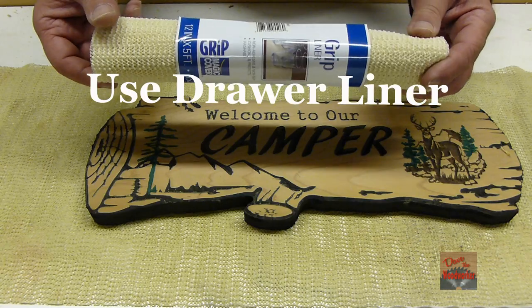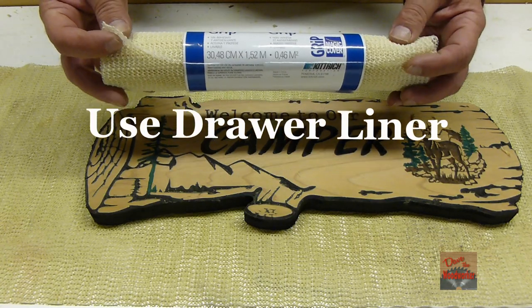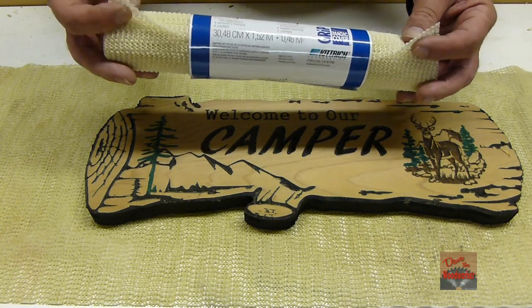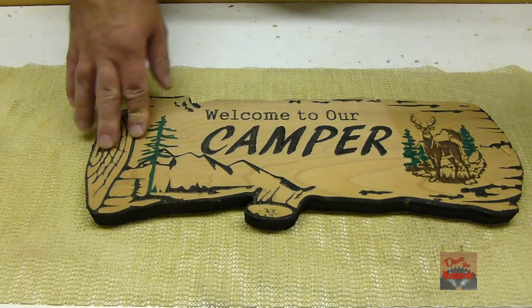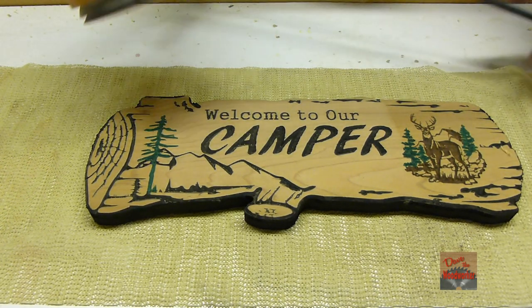These liners for your kitchen drawers—you can buy them at the Dollar Tree for a dollar—will hold things down while you're sanding.